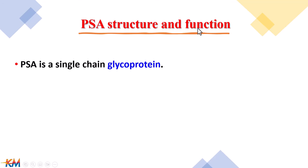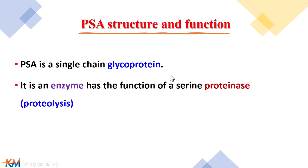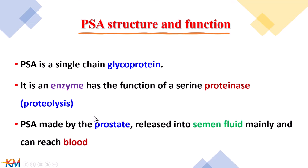PSA structure and function: PSA is a single chain glycoprotein. It is an enzyme and considered one of the serine proteinases. Serine proteinases are proteolytic enzymes that perform proteolysis for proteins. PSA is synthesized by the prostate gland and released in large quantities into seminal fluid.